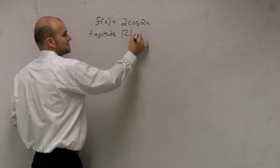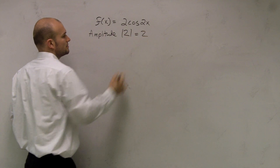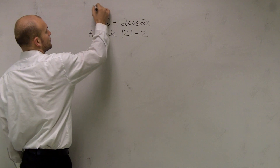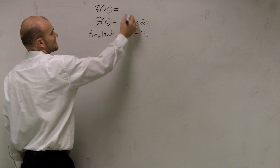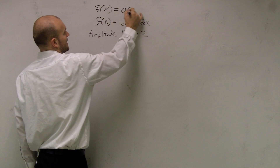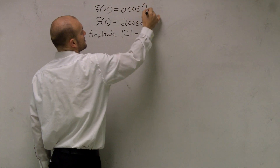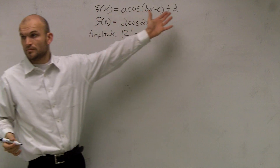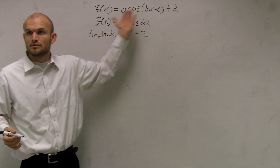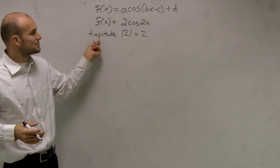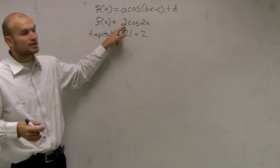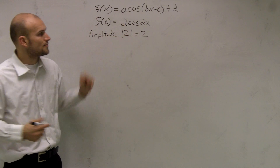So it's going to be 2, and the absolute value equals 2. Our general form is F of X equals A cosine of BX minus C plus D. We find our amplitude, which is just the absolute value of A — your number in front of cosine — so it ends up being 2.